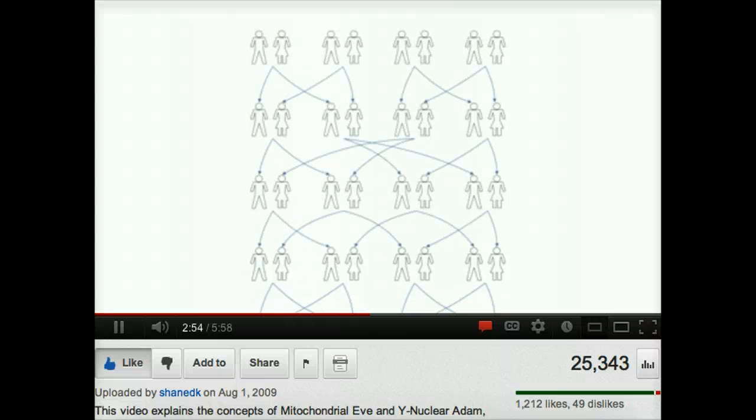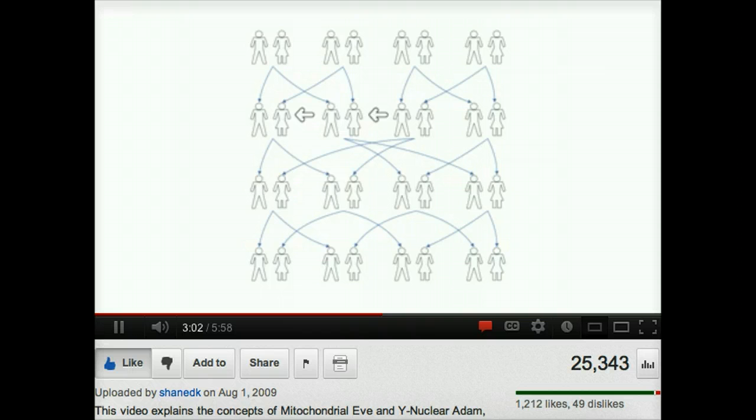She's not even the common ancestor of every single female—these females in the second generation are not related to her. And of course, she's not an ancestor of the females in her own generation. Mitochondrial Eve just represents the woman who, as luck would have it, managed to pass on her mitochondrial DNA to everyone in the current generation.